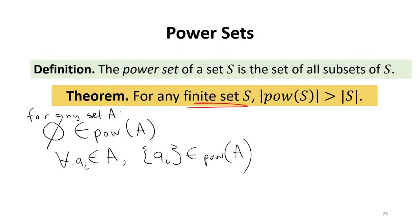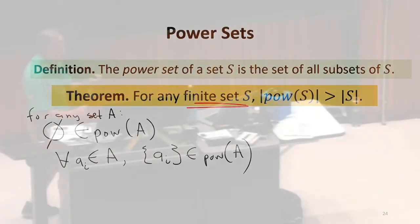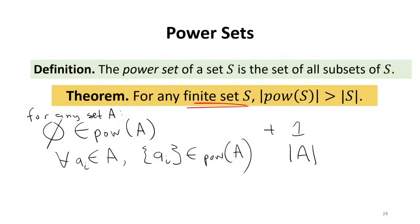Every element by itself, there's a singleton set that contains just that element in the power set. So we've got at least one more. This is N of them. This is the cardinality of S of them, plus one, because it's also got the empty set. The name power set comes from it actually has two to that cardinality of S. For now, we only care about more. We don't care about the actual number. So we know it's bigger.